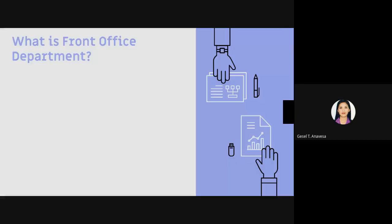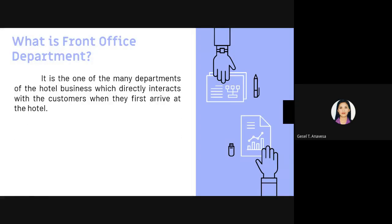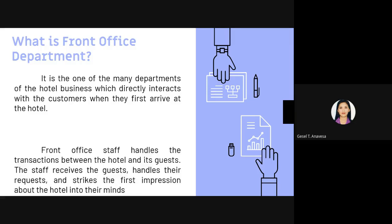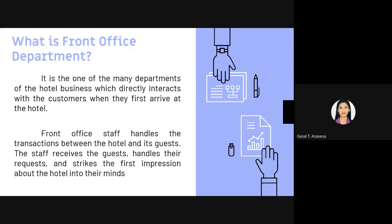What is the front office department? It is one of the many departments of the hotel business which directly interacts with the customer. When you first arrive at the hotel, front office staff handles the transactions between the hotel and its guests. The staff receives the guest, handles requests, and strikes the first impression about the hotel in their minds.